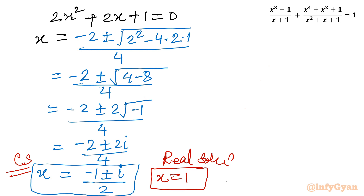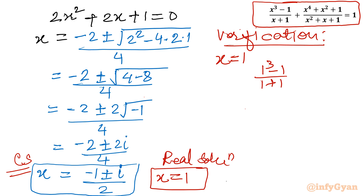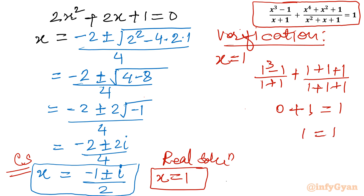Let us verify our real solution x = 1. Substituting x = 1 into the original equation: (1³ - 1)/(1 + 1) = 0/2 = 0. Then (1⁴ + 1² + 1)/(1² + 1 + 1) = 3/3 = 1. So the left-hand side equals 0 + 1 = 1, which equals the right-hand side. This confirms x = 1 is a valid and verified solution. Two solutions are complex and one solution is real: x = 1.